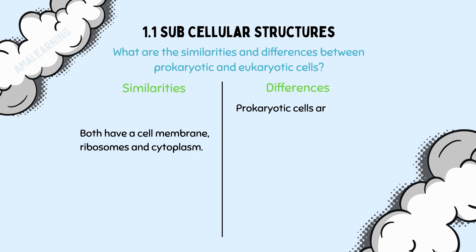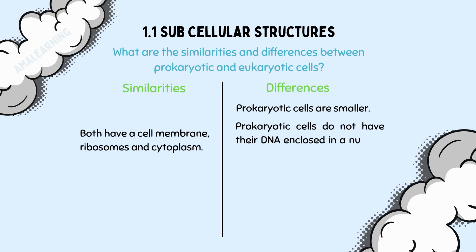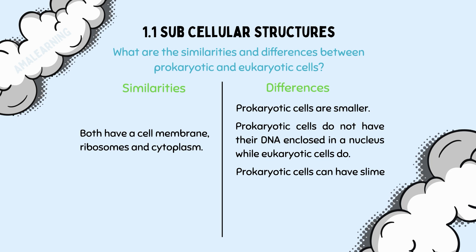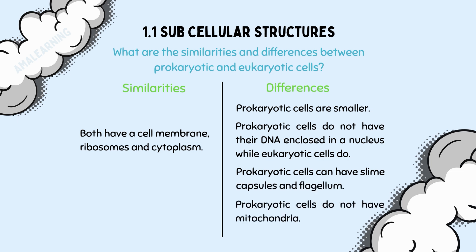Correct answers for differences include: prokaryotic cells are smaller; prokaryotic cells do not have their DNA enclosed in a nucleus while eukaryotic cells do; prokaryotic cells can have slime capsules and flagellum; and prokaryotic cells do not have mitochondria.